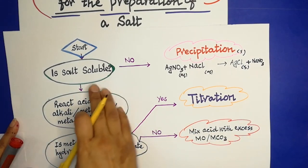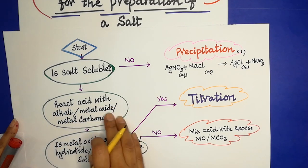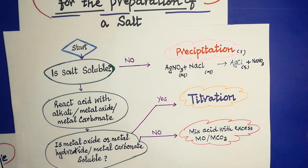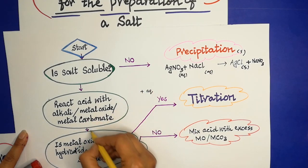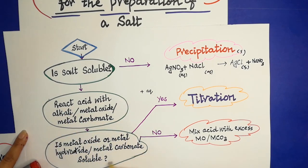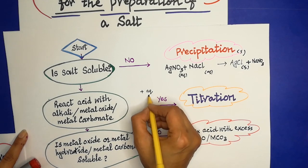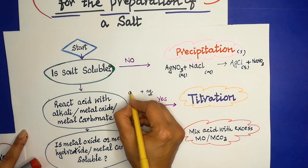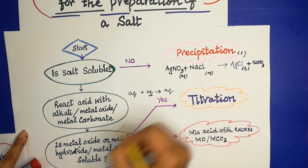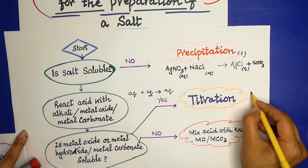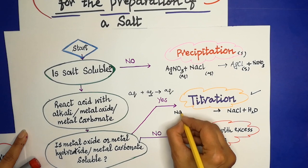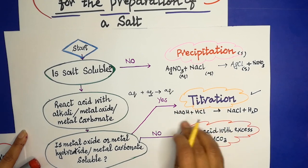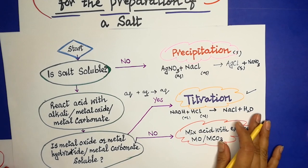If the salt is soluble, we react an acid with a metal oxide, metal hydroxide, or metal carbonate. If the component we are using with the acid is also soluble — meaning both reactants are in aqueous state — then the procedure we use is titration. For example, to prepare sodium chloride we use an alkali and an acid, both in aqueous state, and use the titration method.